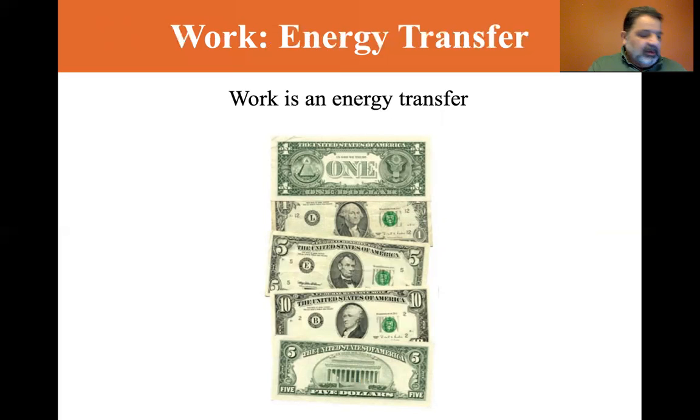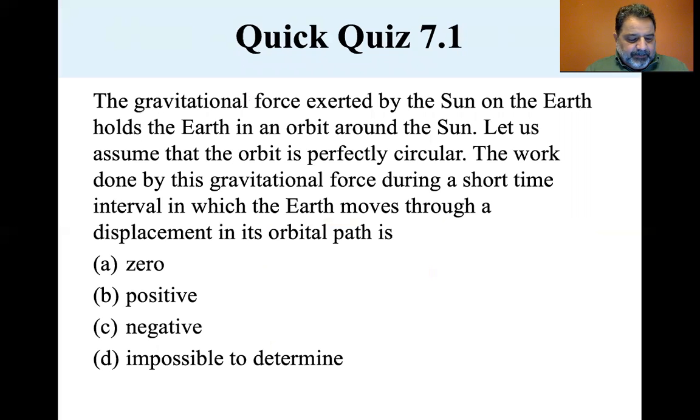And I think let's, oh yeah, let's do this. Let's do a quick quiz. Okay. The gravitational force exerted by the sun on the earth holds the earth in an orbit around the sun. Let us assume that the orbit is perfectly circular. We'll learn later that it's elliptical, but it's practically circular. So let's assume that the orbit is perfectly circular. The work done by this gravitational force during a short time interval in which the earth moves through a displacement in its orbital path is zero, positive, negative, or impossible to determine.